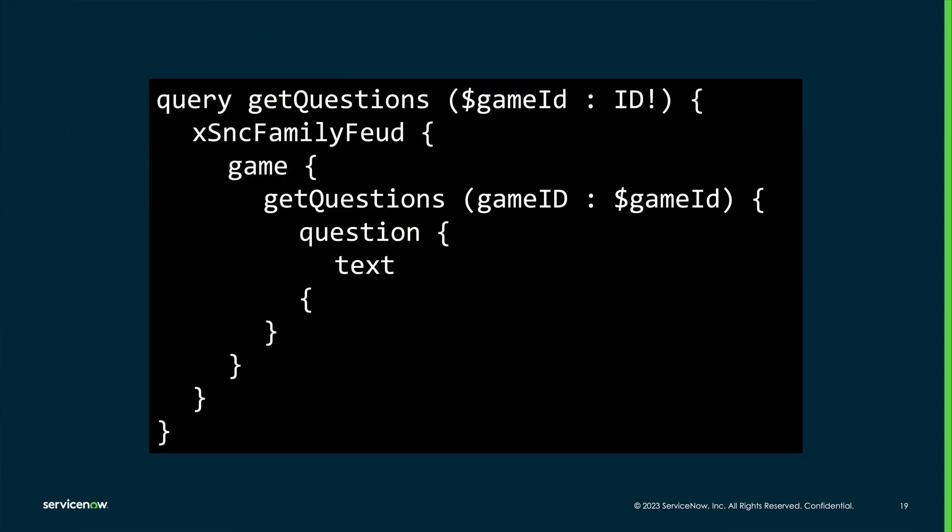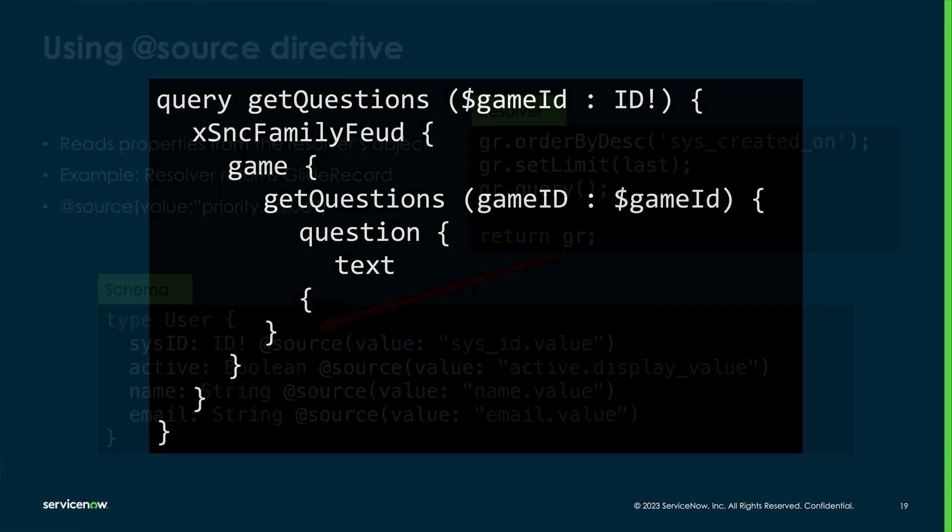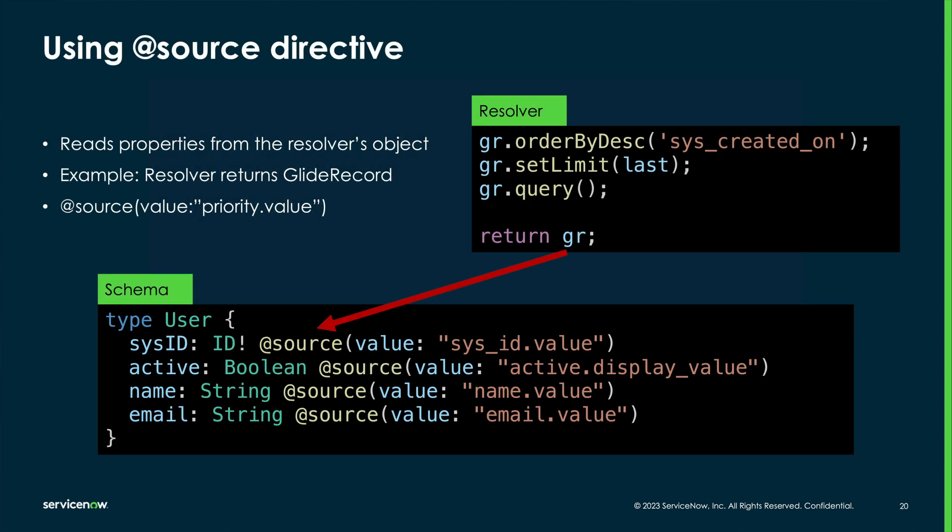The resolver's env object has another method called GetSource, which is very handy for returning objects from the resolver and defining the actual field values in the schema.